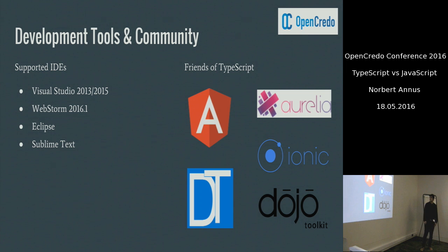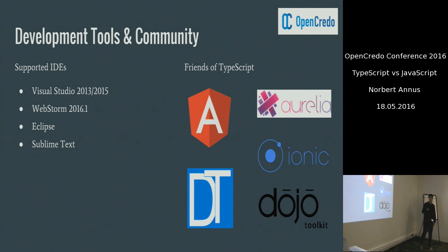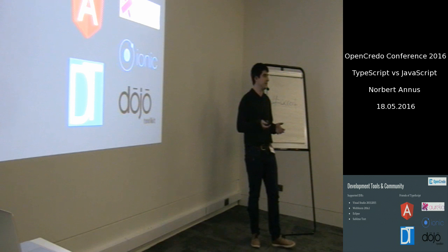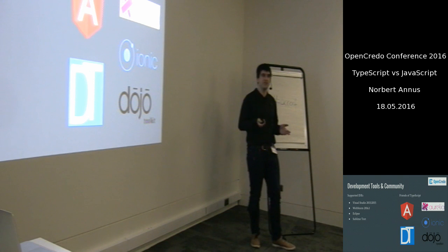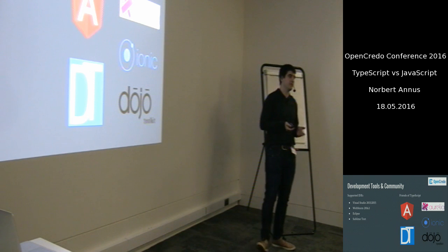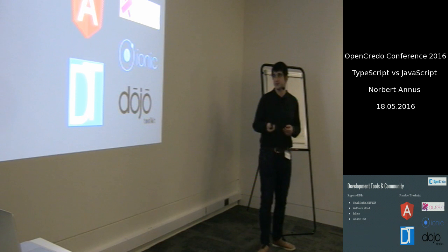There are various famous frameworks which embrace the usage of TypeScript. For example, the Aurelia framework, the Ionic framework, or the Dojo Toolkit. I would like to mention that the Angular team started to develop Angular 2 in a language called AtScript, which had lots in common with TypeScript. So last year they made an agreement with Microsoft and dropped their own language in favor of TypeScript.